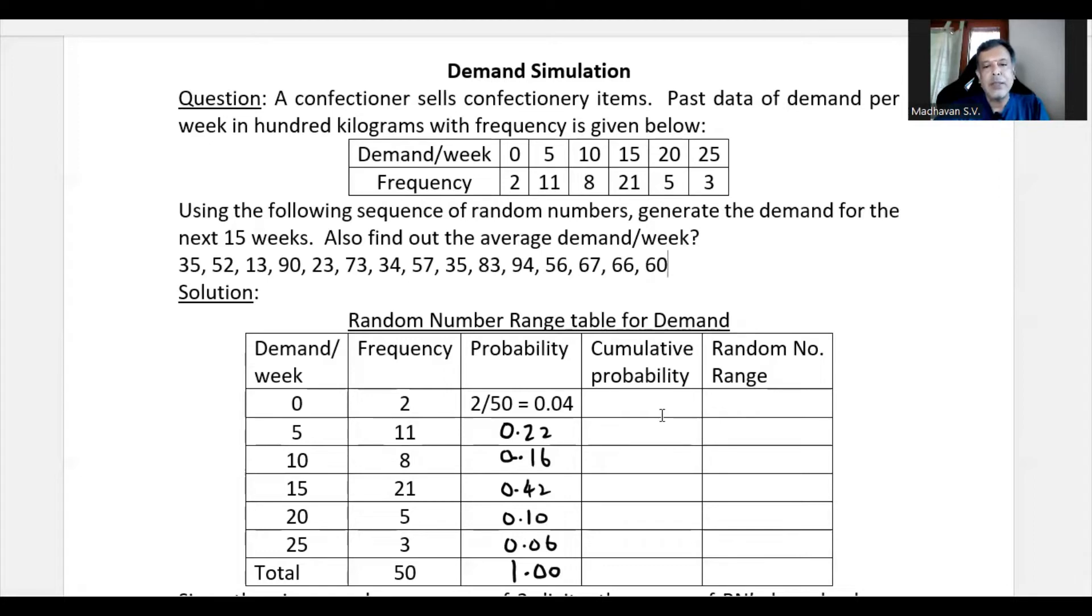Now in the next column, we'll be calculating cumulative probability. First one will be 0.04. The next one will be 0.26. This will be 0.42. This is 0.84. This will be 0.94 and this will be 1.00.